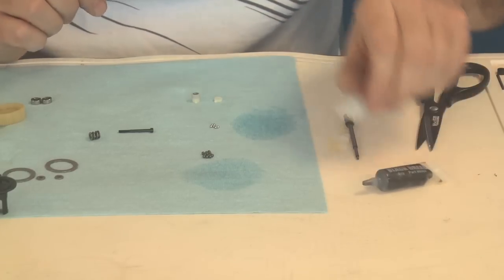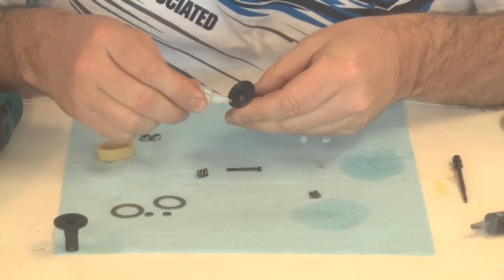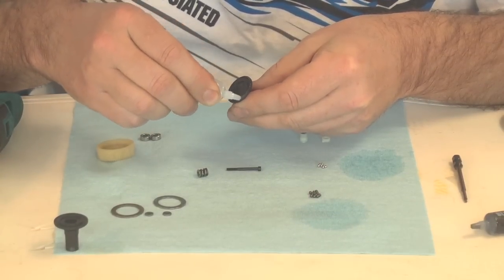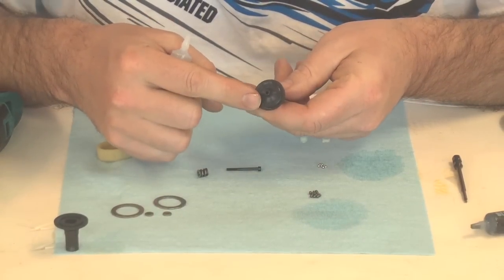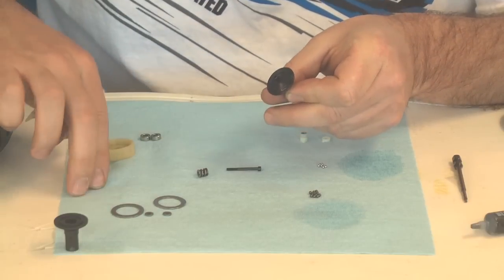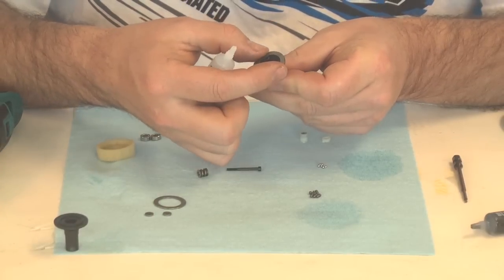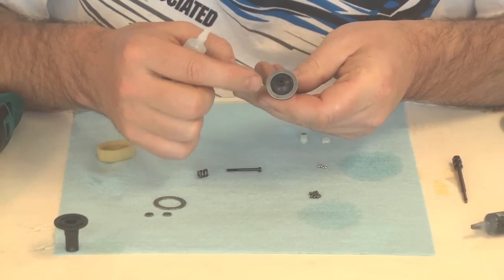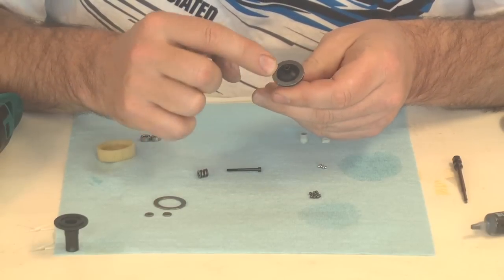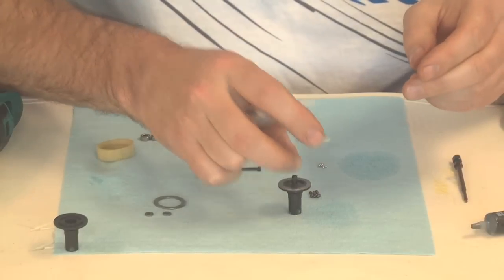Okay now we're going to take our diff halves and put a bead of the white grease, clear silicone grease. And then put the ring on. Now what this does is it helps locate the ring. It does already have a locator where it's stamped. It just helps hold it in place so it's not spinning.